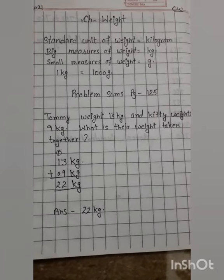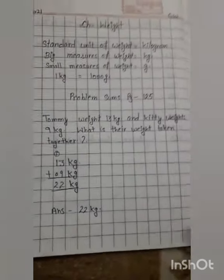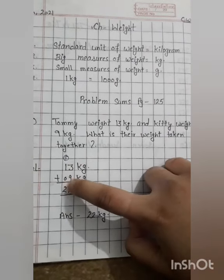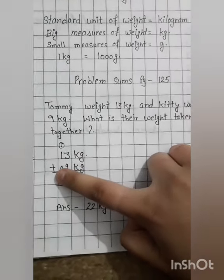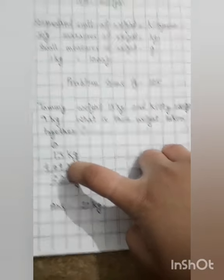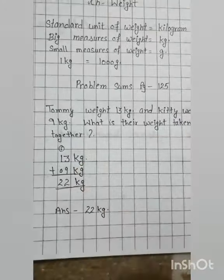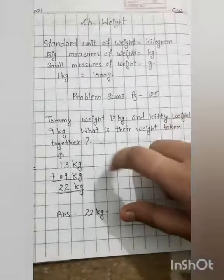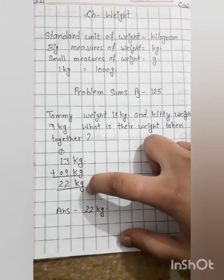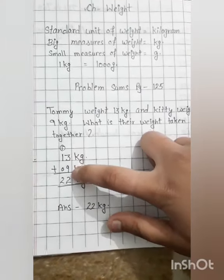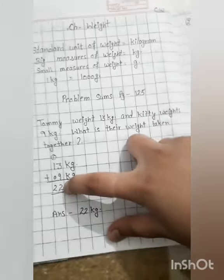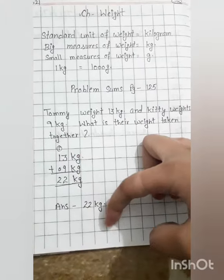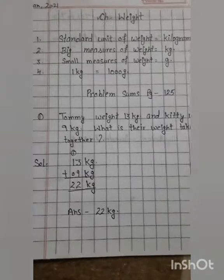We will write 13 kg and then 9 kg. We don't write 9 under the 1; we write 9 under the 3. Remember, single digits are always filled starting from the right side. Since there's nothing on this side, we write 0. Write kg under kg. 3 plus 9 is 12. Write 2 here and 1 is carry. 1 plus 1 is 2. Our answer is 22 kg.